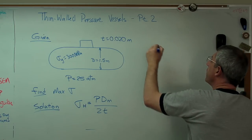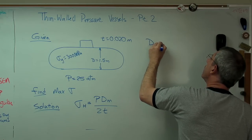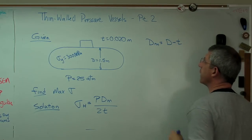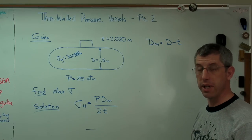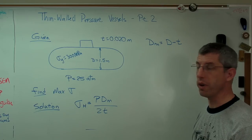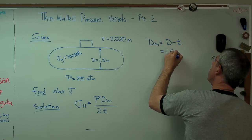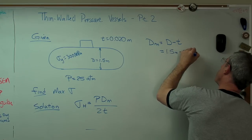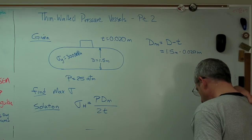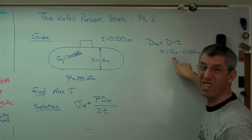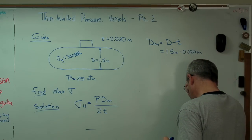All right. So I need to know the mean diameter. Well, that's easy. Mean diameter is just the diameter minus the wall thickness. The inner diameter, remember, is the outer diameter minus two wall thicknesses. Here we're interested in mean. So it's 1.5 meters minus 0.020 meters. A very small number, a very small change there. You could almost use just the outer diameter and still get about the right answer.